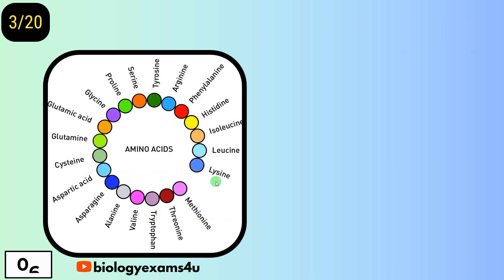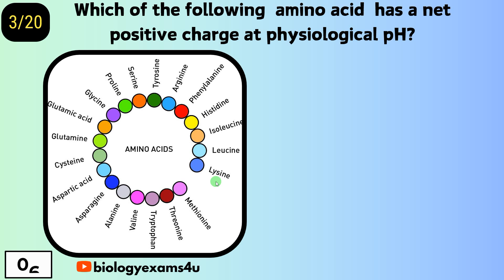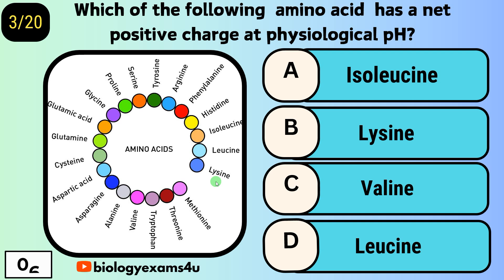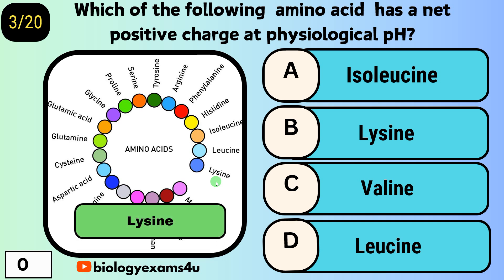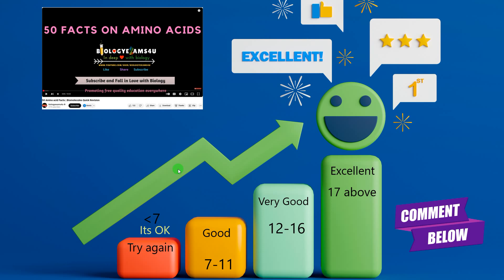Question number three: which of the following amino acids has a net positive charge at physiological pH? Option A, isoleucine; option B, lysine; option C, valine; option D, leucine. The answer is lysine, which is a positively charged amino acid, as you see here in this structure.